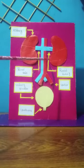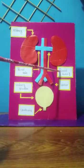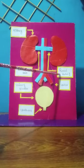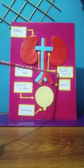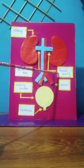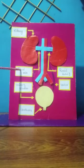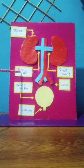Blood supply of the kidney: the right and left renal arteries arise from the abdominal aorta and supply the right and left kidney respectively. The right and left renal veins take blood from both kidneys to the inferior vena cava.